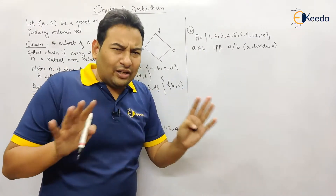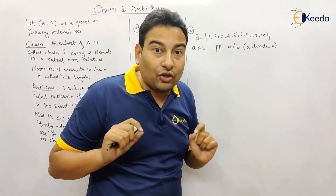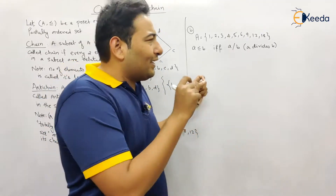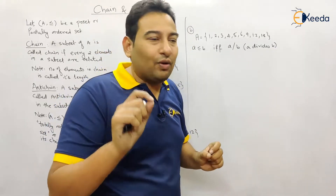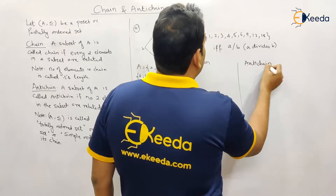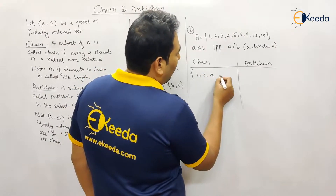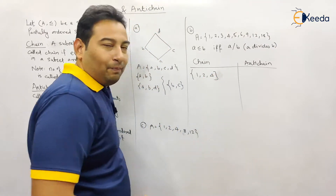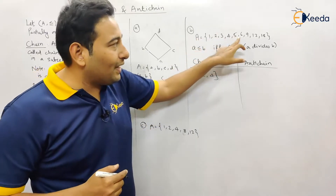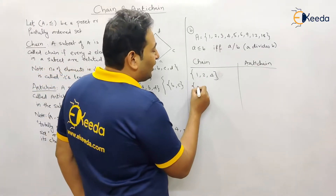Now let us see with an example. Here the set A has relation: a is related to b if and only if a divides b. This is the divisibility poset. There can be many possible chains — let's say {1, 2, 4}: one divides two, one divides four, two divides four, so it's a chain.